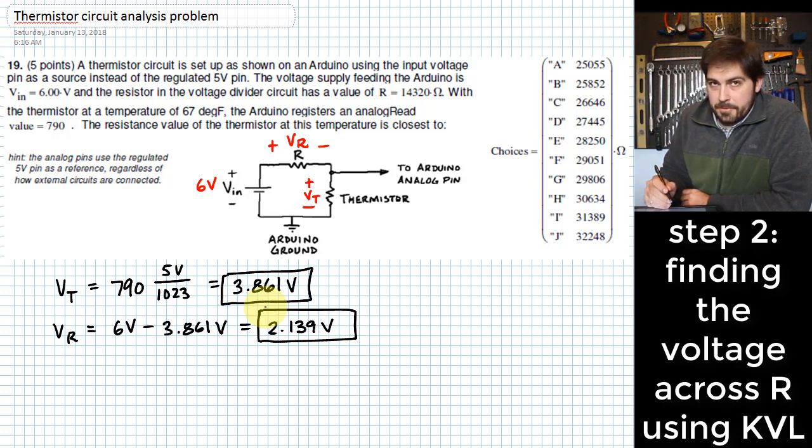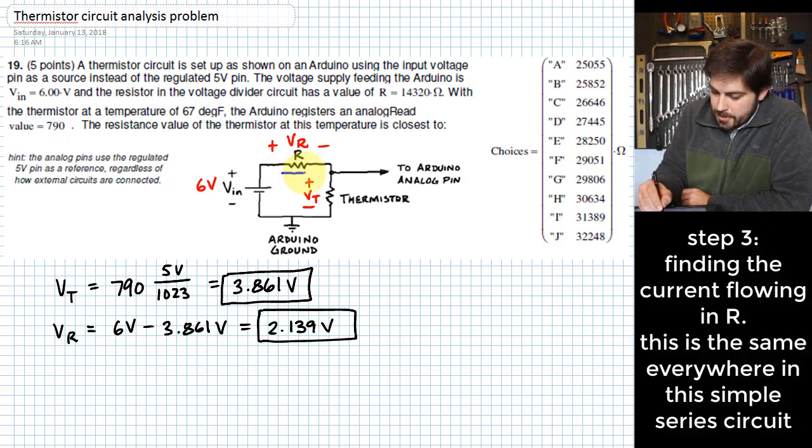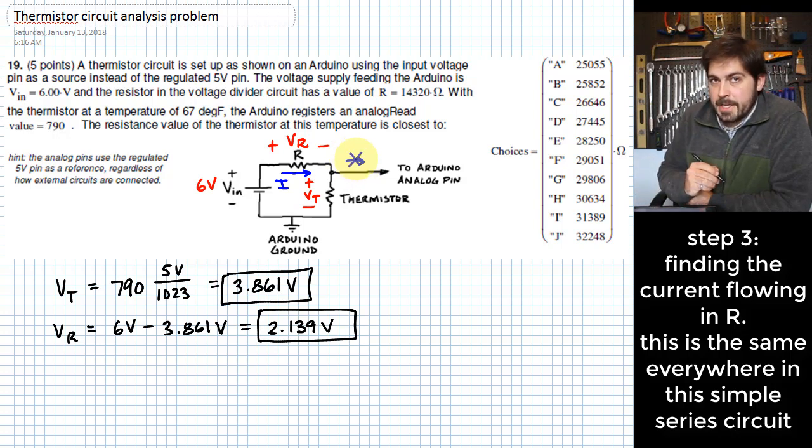Now that we know the amount of voltage that goes across that resistor, we can find how much current flows in that resistor, and that current has to be the same as it is everywhere else in this circuit. There is no current that flows on this leg over here. There's no current flow because that is a high impedance input on the Arduino. So if we find the current that flows in resistor R, we also find the current that is flowing in the thermistor. So that might be handy.